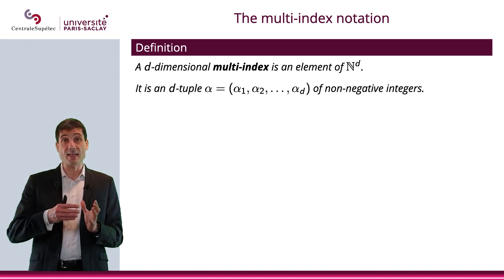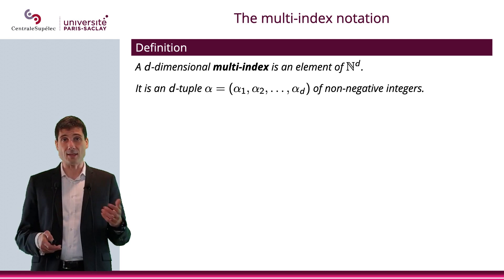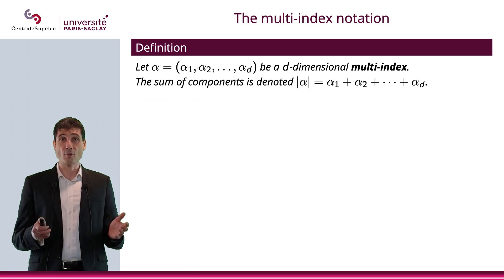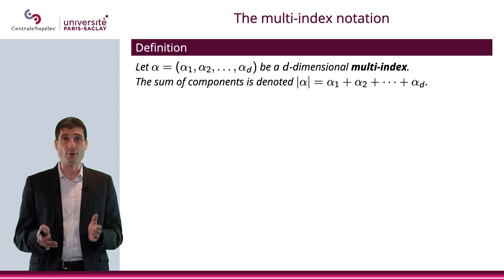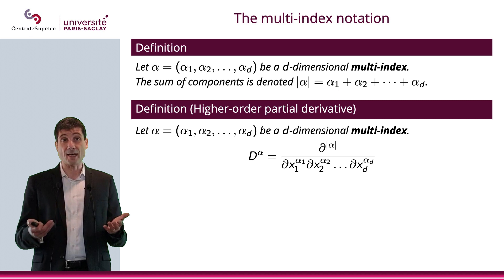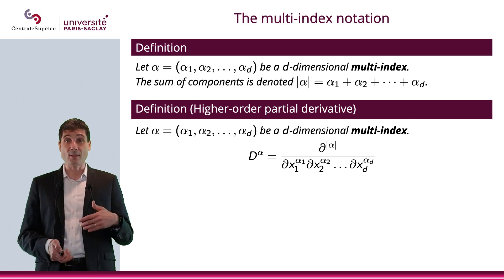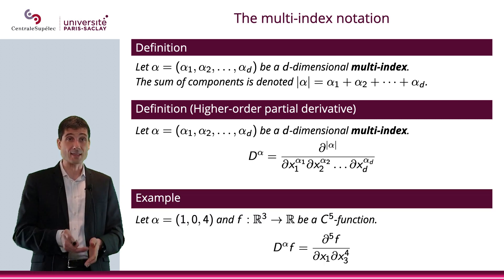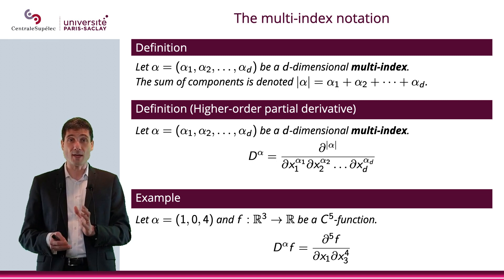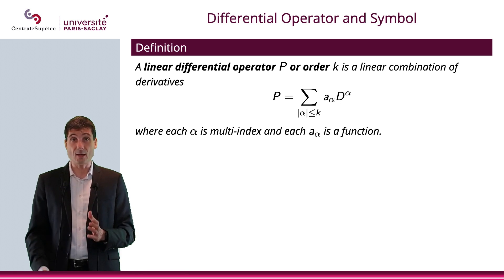Now I would like to introduce the multi-index notation. A multi-index is simply a d-tuple of non-negative integers, so alpha equals (α₁, …, α_d) where each α_i is a non-negative integer. For example, (1, 0, 4) is a three-dimensional multi-index. The sum of the components is denoted |α| — for that example it would be five. Based on the multi-index you can define the derivative D^α, which means differentiating with respect to all the components. For example, D^{(1,0,4)} would be the fifth derivative of f with respect to x₁ once and x₃ four times.